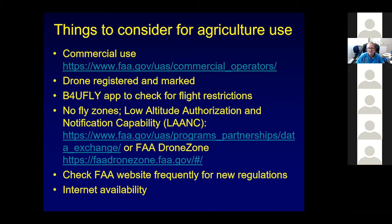The registration is very easy — you go to the FAA website, fill in a form, and it costs a few dollars. It's valid for three years and then you can renew it. You should also download on your iPad or iPhone the B4UFLY app before you fly. It shows you flight restrictions around your location, or you can put in a location 10 miles away to check for restrictions. No-fly zones are usually five miles around airports, military bases, and some hospital helipads.